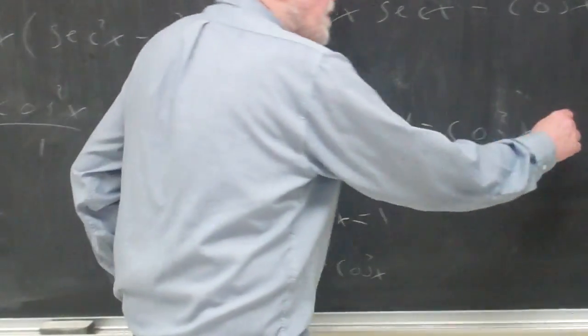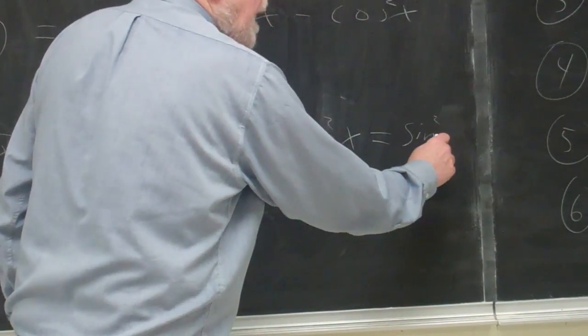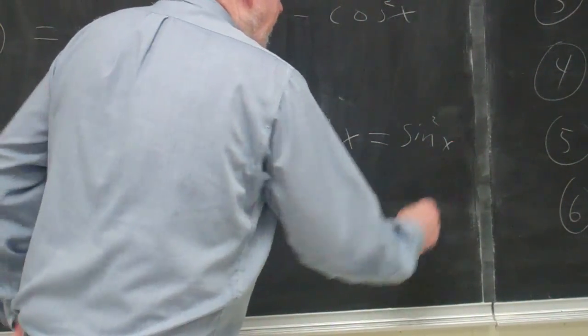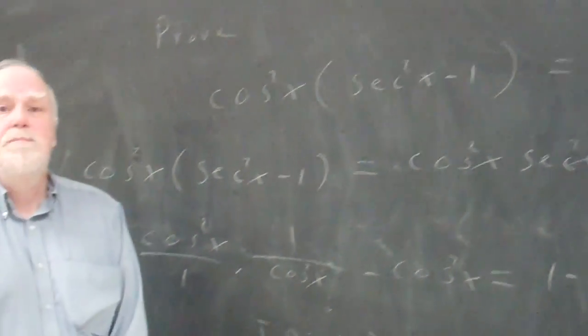So 1 minus cosine squared equals sine squared by that identity. It happens to be identity number 6. And so I got to where I wanted to go, to sine squared. Thank you.